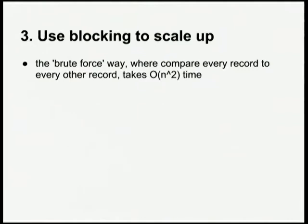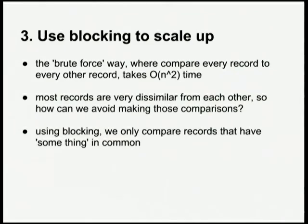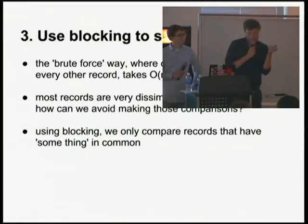The brute force way is to compare each record to every other record, and that increases with the square of the number of records. But the key insight is that most records are very dissimilar from each other — they have nothing in common. So how can we avoid making those comparisons? Blocking allows us to only compare those records that have something in common.